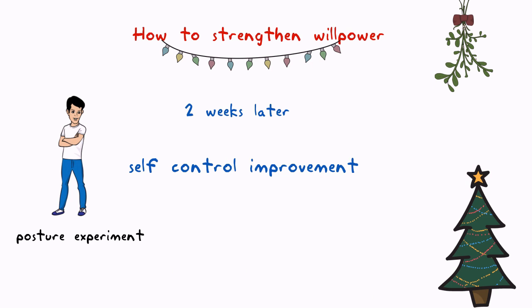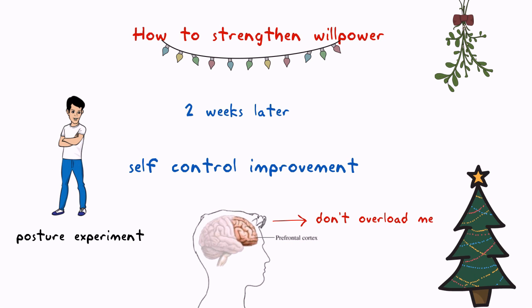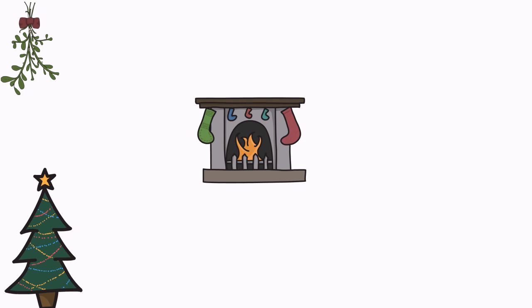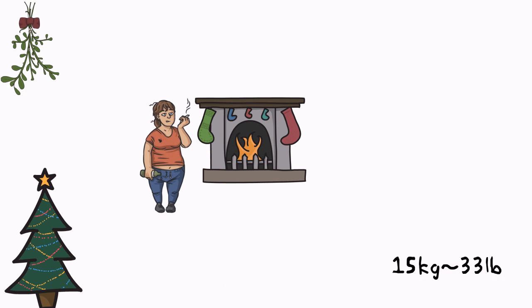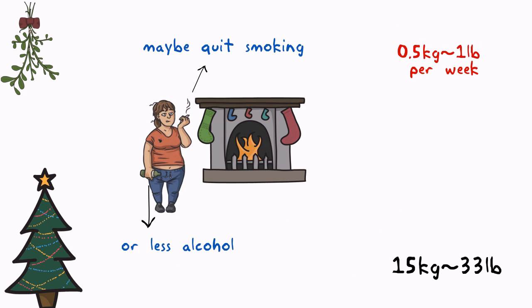If you concentrate on one thing at a time, this will strengthen your willpower in other areas. The key is to not overload your prefrontal cortex. Now that you've picked one resolution, make sure to break it down as far as you can to the simplest task possible. If your goal is to lose 15 kilograms this year, break it up into segments of half a kilogram per week or two kilograms per month.